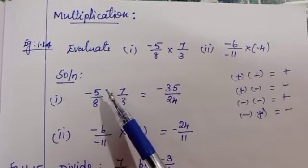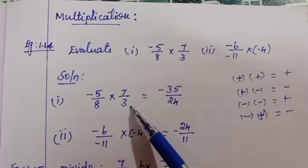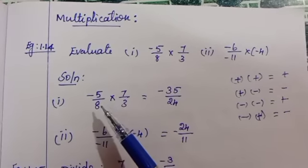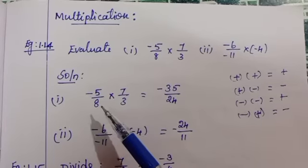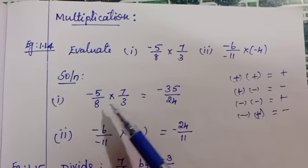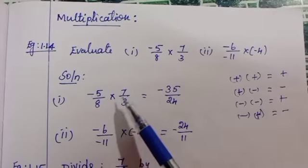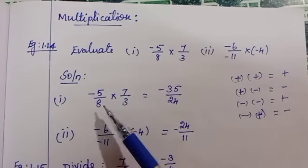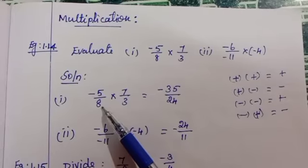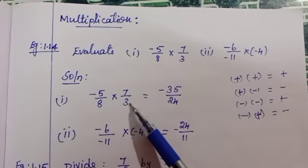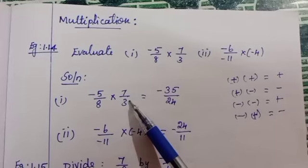The first problem solution: -5/8 × 7/3. For the previous two methods, addition and subtraction, first we checked if the denominators are same or different. But in this multiplication problem, you do not worry about these denominators. Whether it is same denominators or different denominators, we have to apply the same rules.